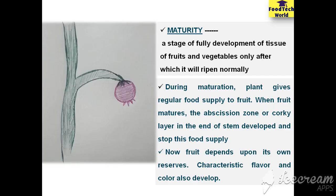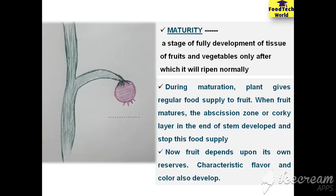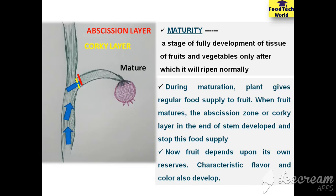This is a plant having an immature fruit. During its maturation, the plant supplies food material to this immature fruit. When this immature fruit gets matured, an abscission layer or a corky layer is formed at the end of the stem. These layers prohibit the entry of food supply to the mature fruit, so the mature fruit is totally dependent upon its own reserves.